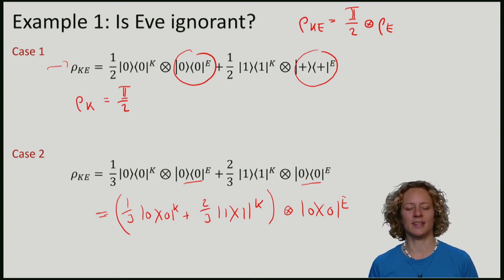It is certainly the case that Eve is independent of the key. This here is a tensor product.